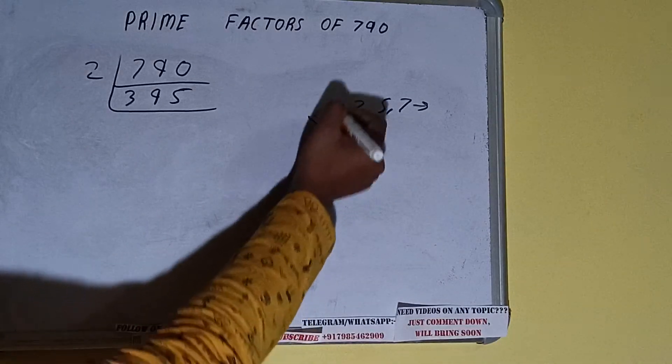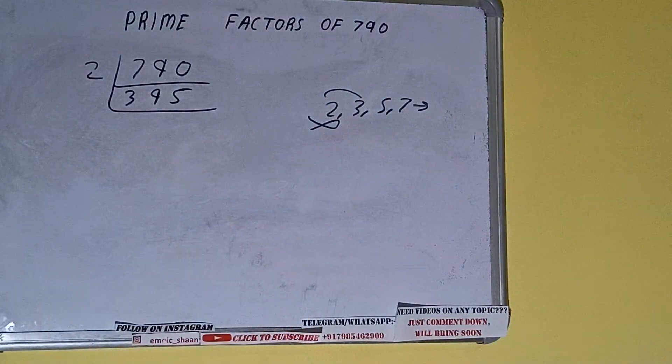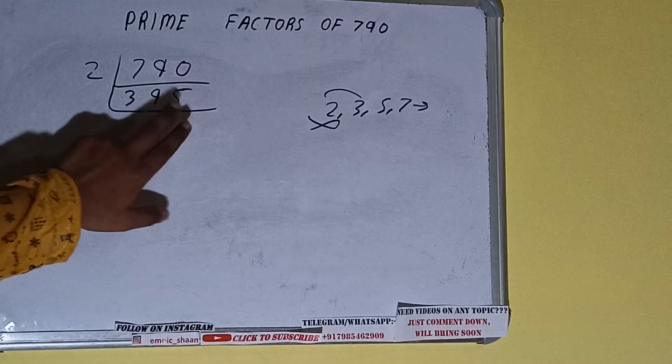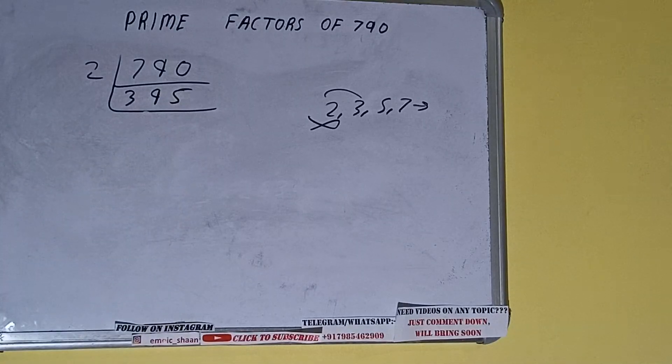So we'll check with the next lowest prime number, that is 3. 3 ones are 3, 3 eights are 9, 3 ones are 3, 2 left. It is not divisible by 3.